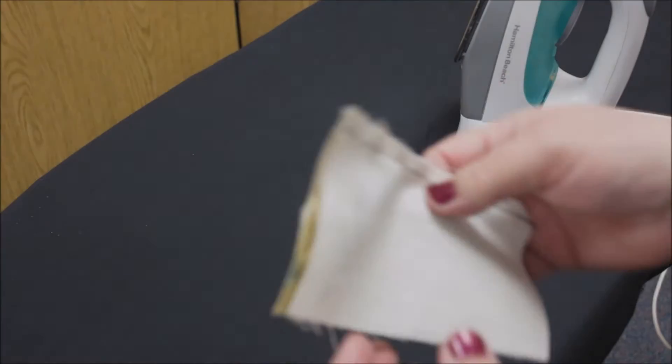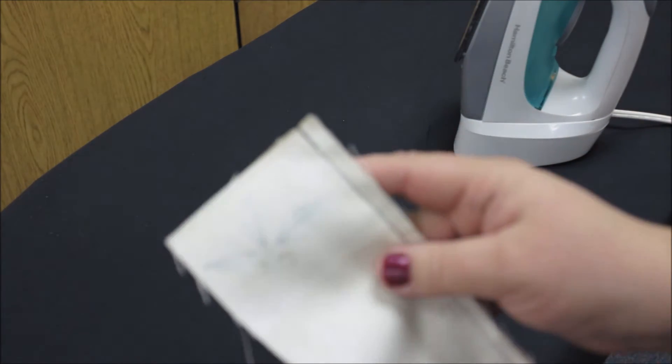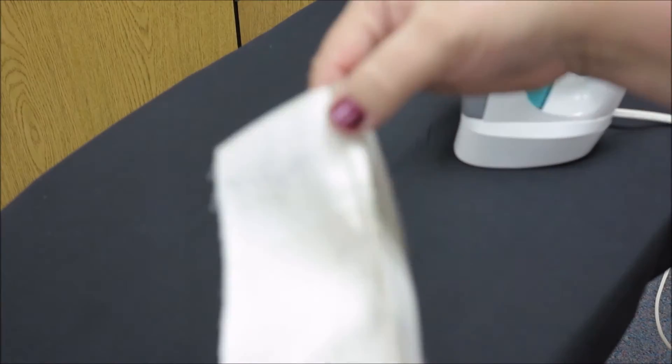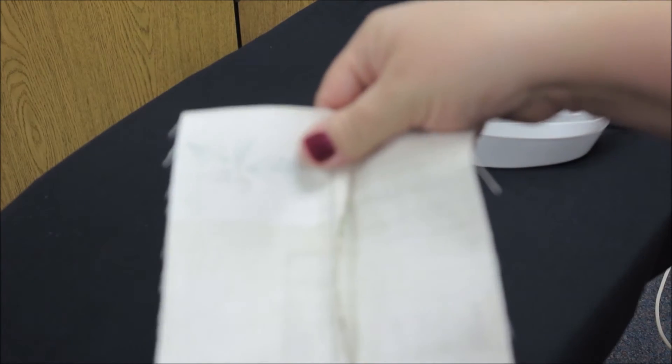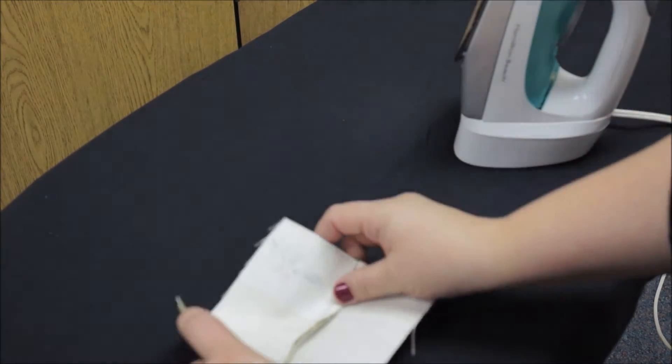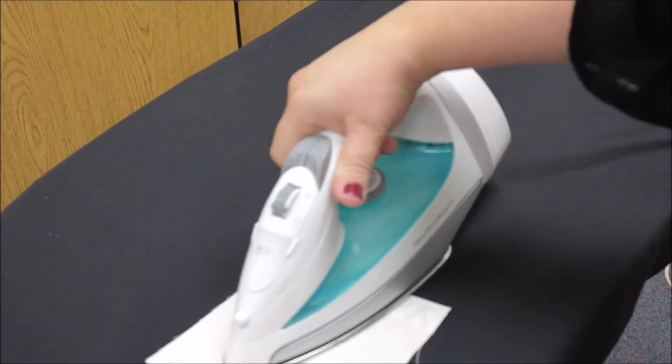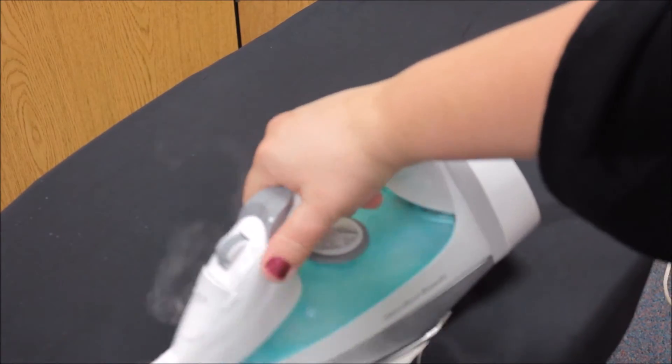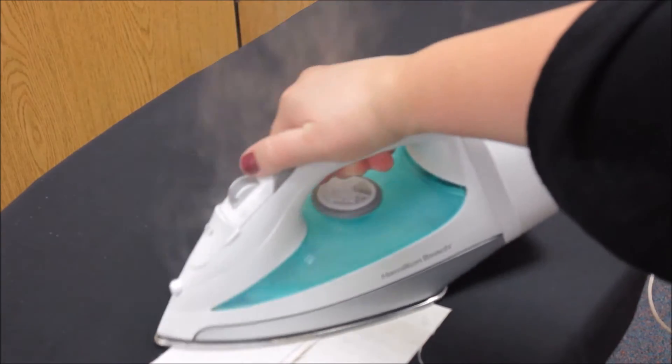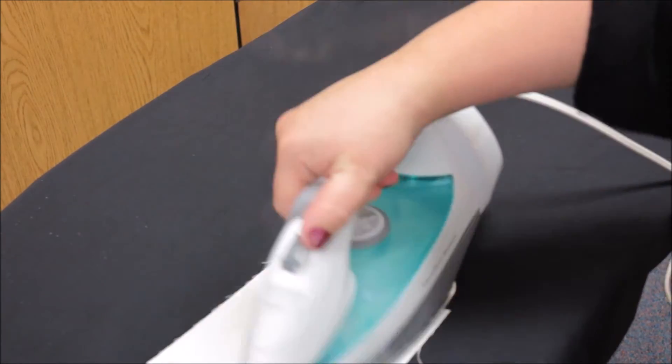Here I am at the iron with my 1/4 inch seam. For this one it says to press the seam allowance to one side, not open this time. So all I have to do is open the fabric, take my iron, and just press the seam allowance to one side. It doesn't matter which side you press it to, and you can use the steam if you'd like.